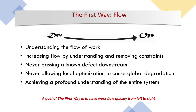The first way is systems thinking, or flow. You should understand the flow of work and remove constraints — think from a systems perspective and remove unwanted dependencies. You should not pass defects downstream: the stream should always go upstream, not downstream toward production. And you should not allow local optimization to cause global degradation — your local system configuration should not affect your global system configuration. Always understand the entire system before designing or coding anything.